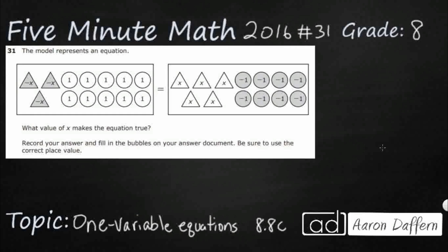We have a model here, a little picture, and we've got some x's and some 1's and some negative x's and some negative 1's. We need to figure out which value of x makes the equation true. We could guess and check, but I think writing an equation and solving for that variable is going to be a lot easier.